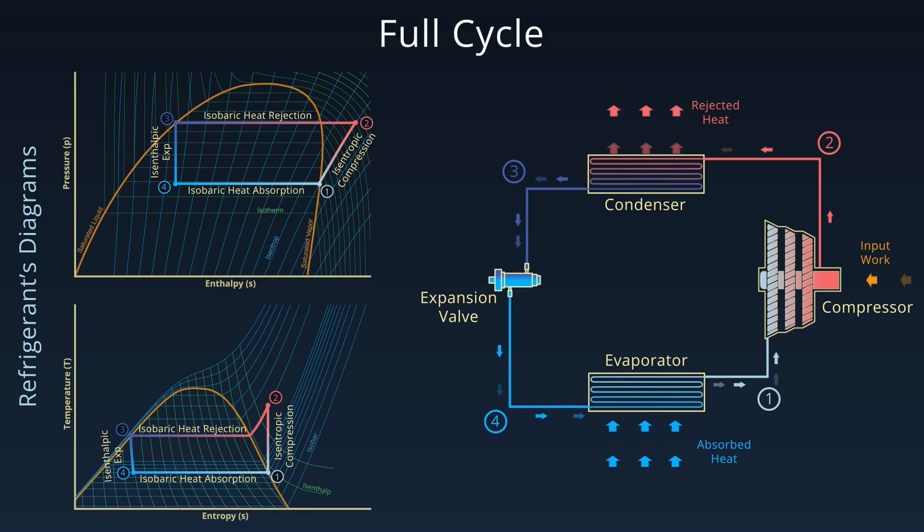So in summary, compression increases pressure and temperature. Condensation removes heat at constant pressure. Expansion drops pressure and temperature without changing enthalpy. Evaporation absorbs heat, turning liquid into vapor, and the cycle repeats.